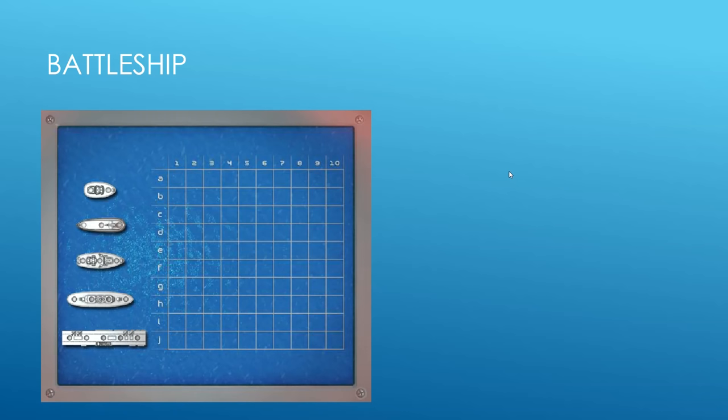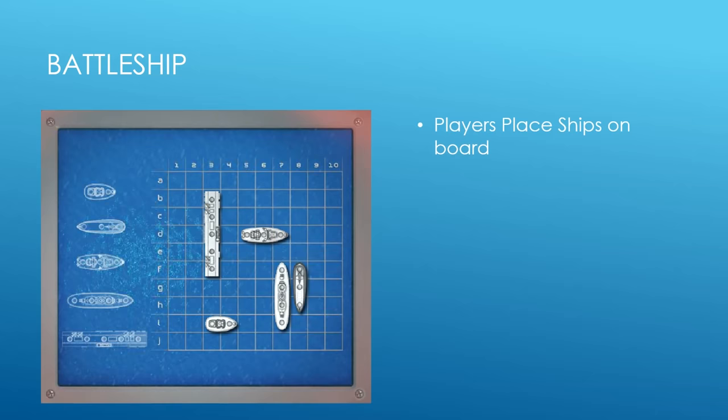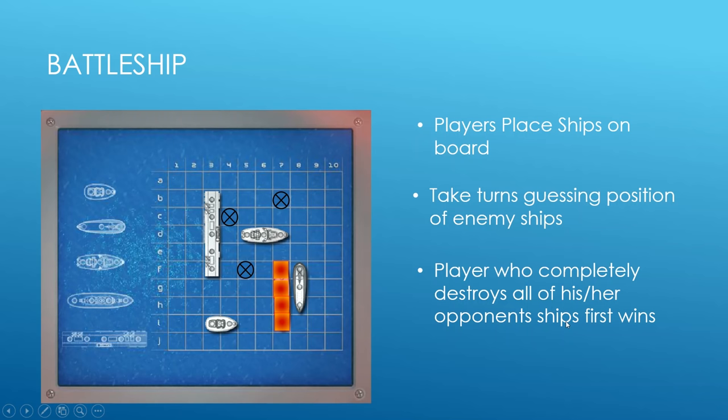If you're watching this video, I'm guessing you're familiar with Battleship, but if not, I'll go through the rules quickly. The game starts with each person placing their ships on the board. Next, you take turns guessing the position of enemy ships. Finally, the player who completely destroys all of their opponent's ships first wins.